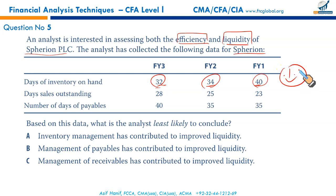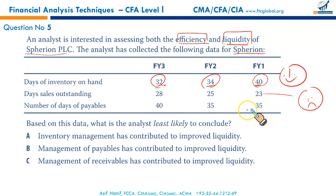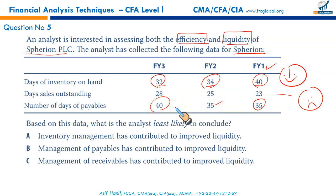Days sales outstanding: receivables were collected within 23 days, then 25 days, then 28 days — customers are delaying payment, which is not good for liquidity. For days payable: the company paid within 35 days in year one and year two, but has now started delaying payments. Delaying supplier payments without damaging the vendor relationship leaves more cash with you, resolving liquidity problems. This is how firms manage cash — delaying payables means having cash to meet urgent expenses.